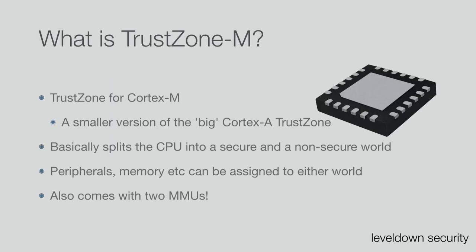Before we start: what is TrustZone-M? TrustZone-M is the small TrustZone — it's basically a simplified version of the big TrustZone you find on Cortex-A processors. If you have an Android phone, chances are very high that your phone actually runs TrustZone, and for example your key store of Android is backed by TrustZone. TrustZone basically splits the CPU into a secure and a non-secure world. You can say that a certain peripheral should only be available to the secure world — for example, if you have a crypto accelerator.